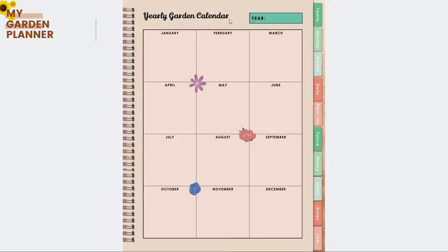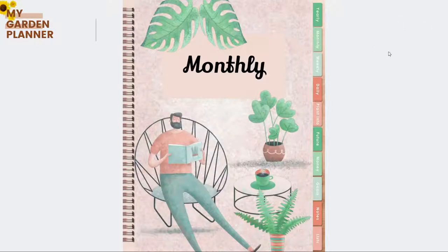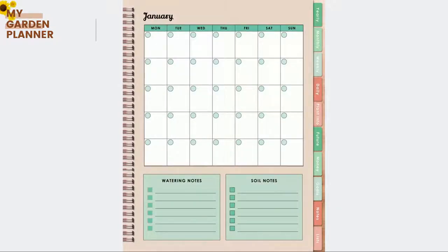For the monthly section, we have overviews and templates of each month where you can plan your gardening activities in more detail. You can also add watering notes and soil notes, and you can see all the month templates that are in the planner.